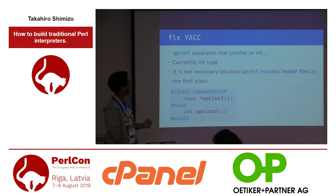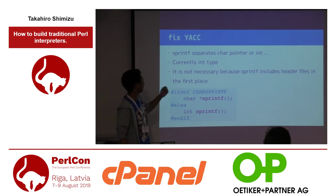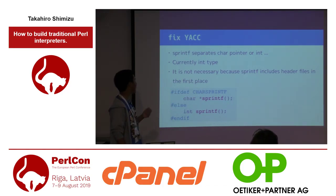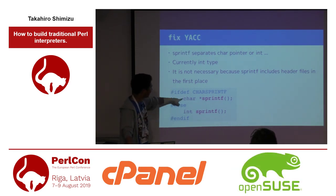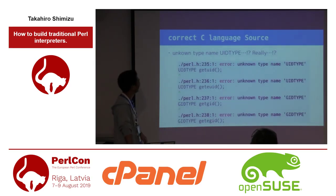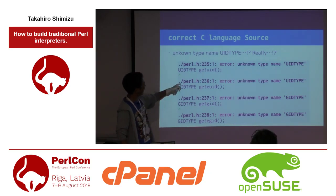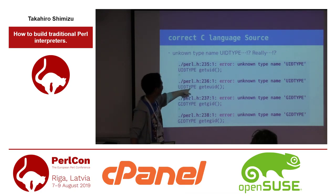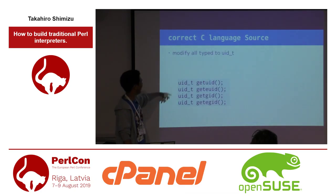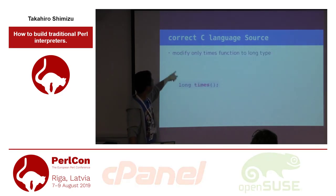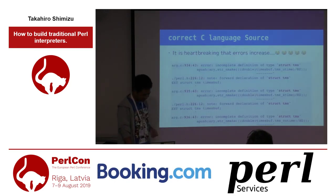The error generated is a sub-core error, but nothing critical. I comment out that line as a fix. Next issue: sprintf with separate char pointer or int — it is not necessary because stdio.h includes header files. This is a macro: char pointer or int. I then remove it. Next: unknown type name 'uid_t'. I check it — modifier type, uid_t square. From uid_t, configure the type. Error: conflict type time_t. I modify time_t and the function to long type.